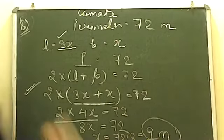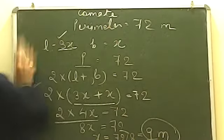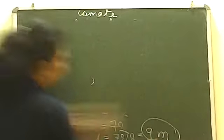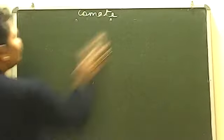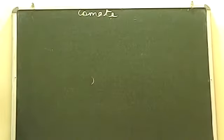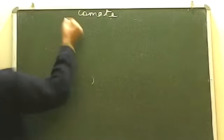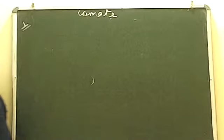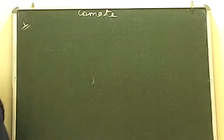Moving on to the more challenging question. Question number 1: what will happen to the area of a rectangle if the length stays the same and the breadth is doubled?